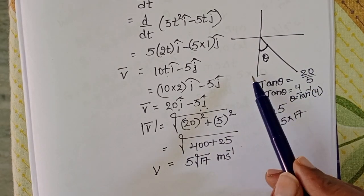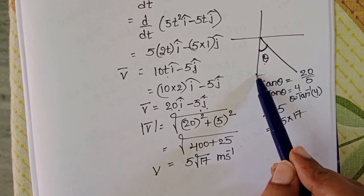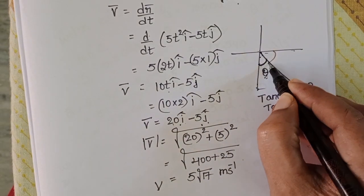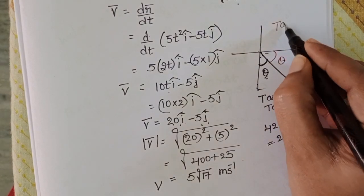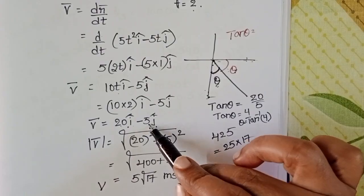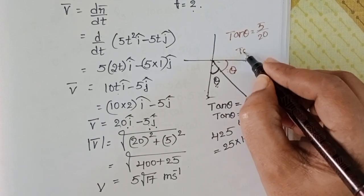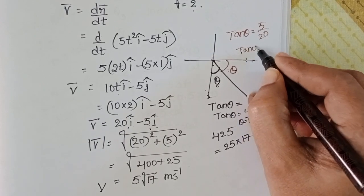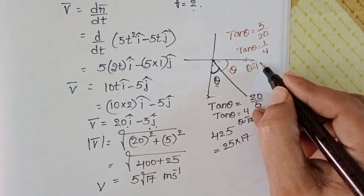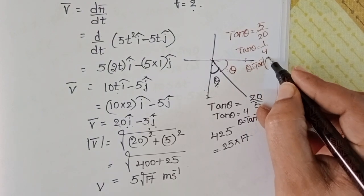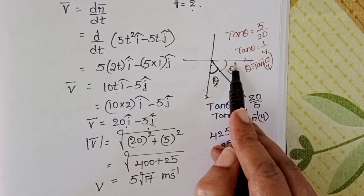The velocity vector makes an angle with the negative y-axis. When we take the same angle with the positive x-axis, tan theta equals 5 by 20, so tan theta equals 1 by 4, and theta equals tan inverse (1 by 4). It makes this angle with the positive x-axis.